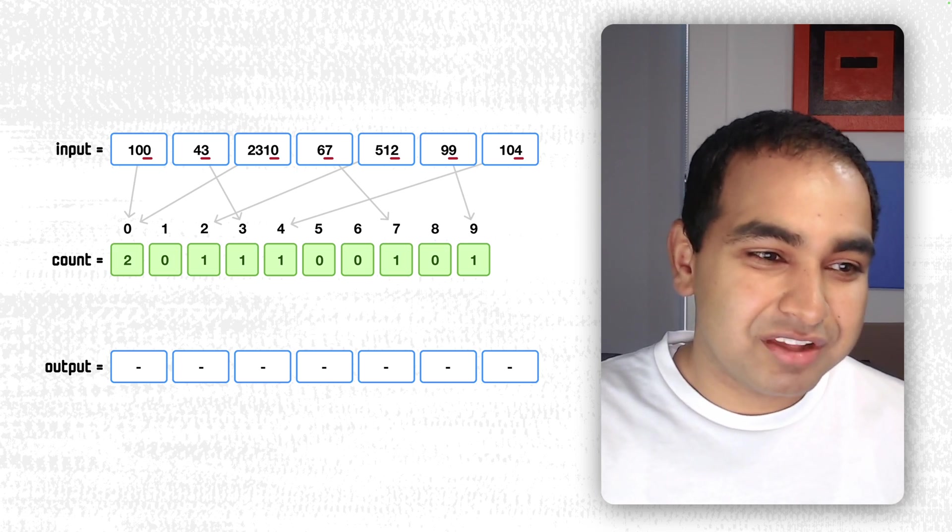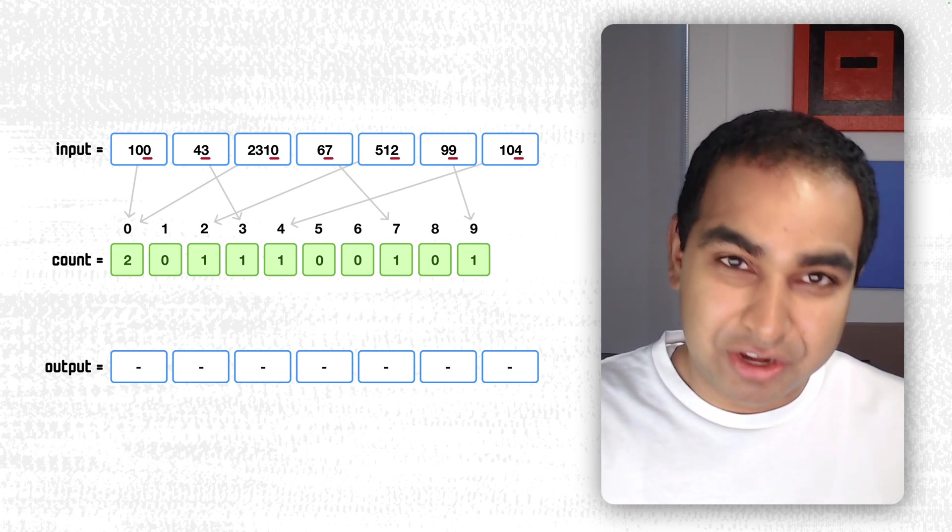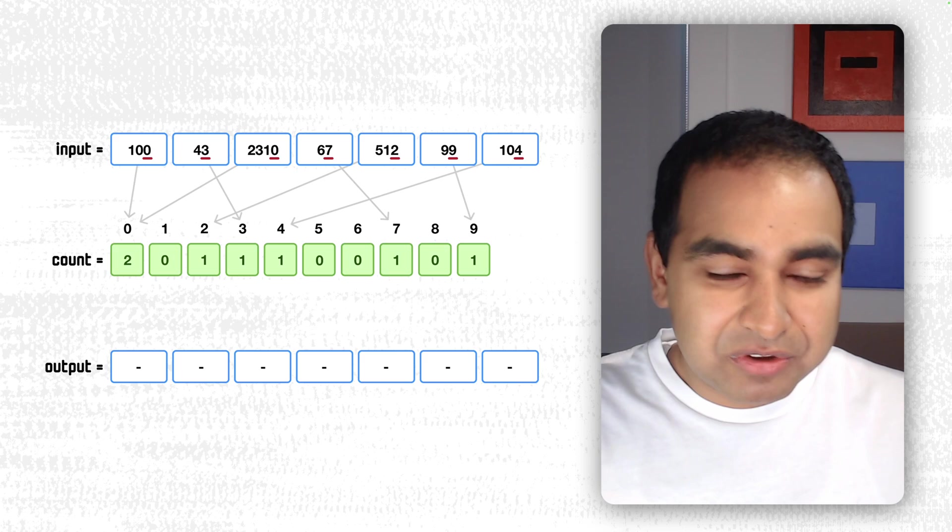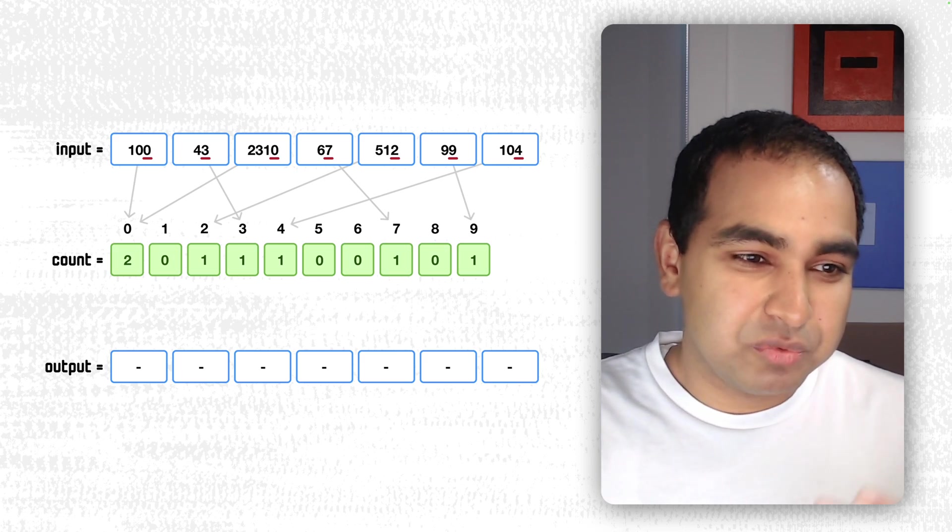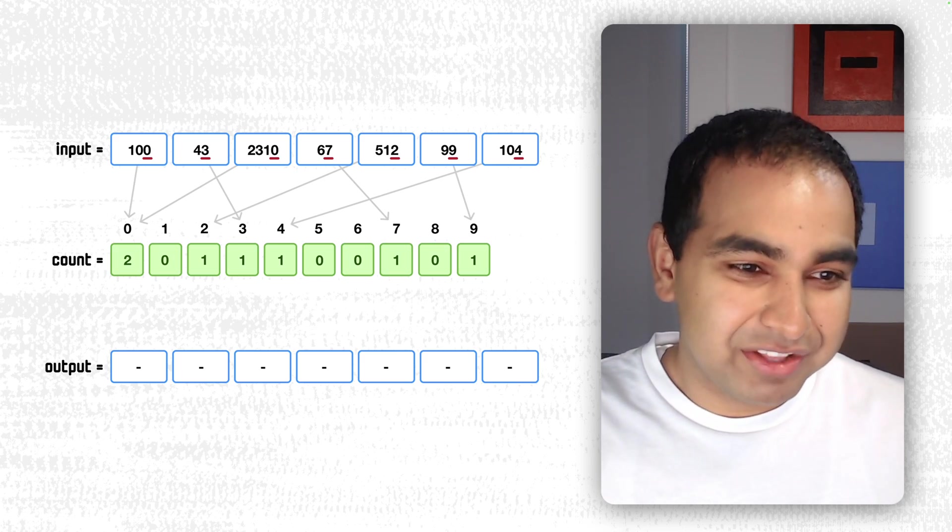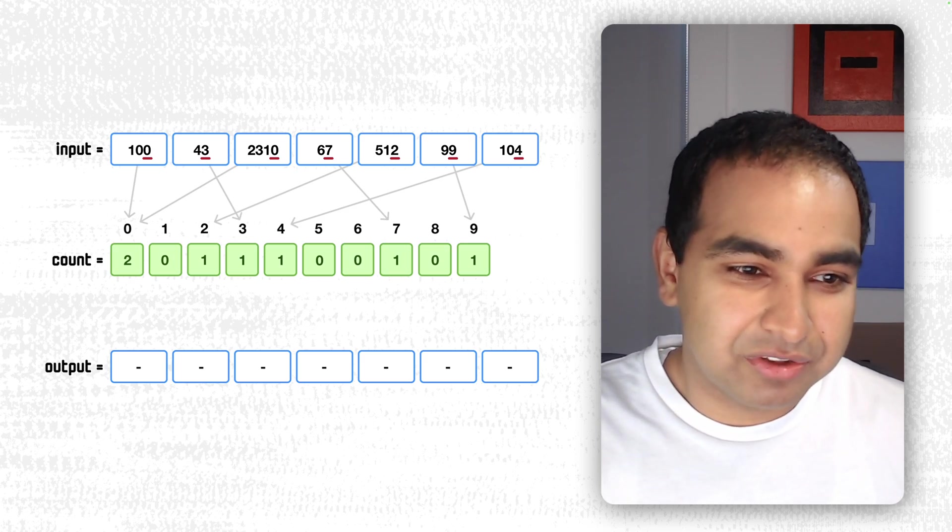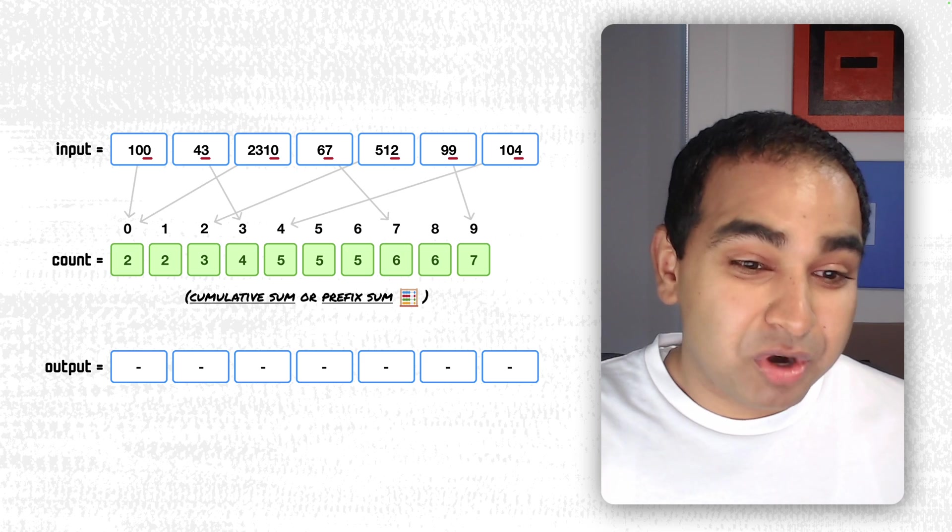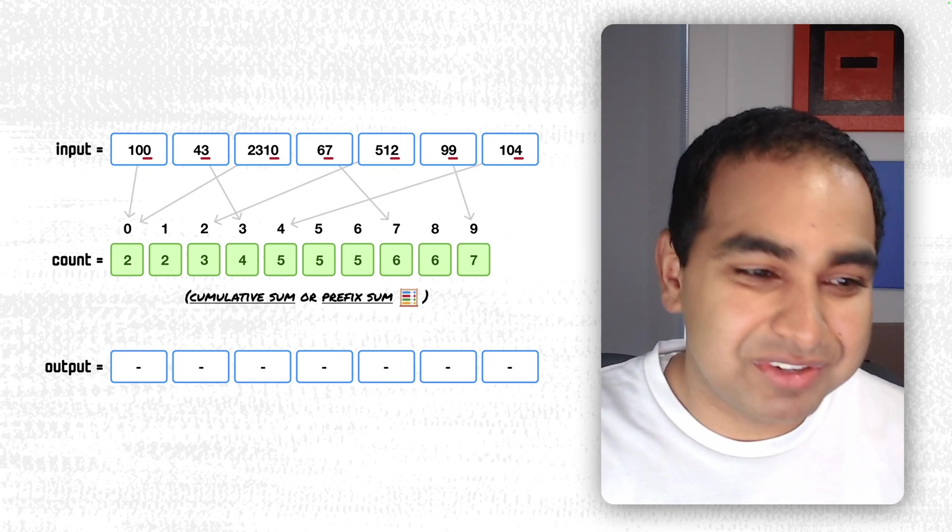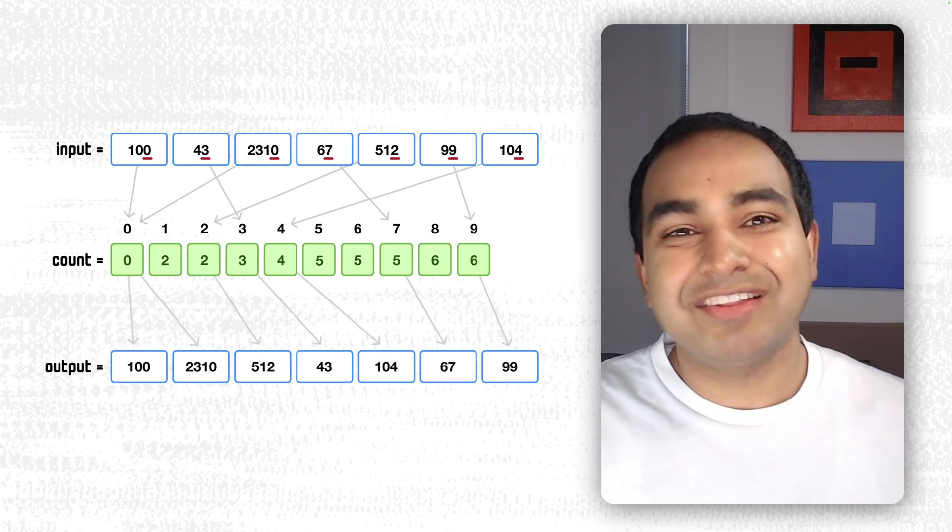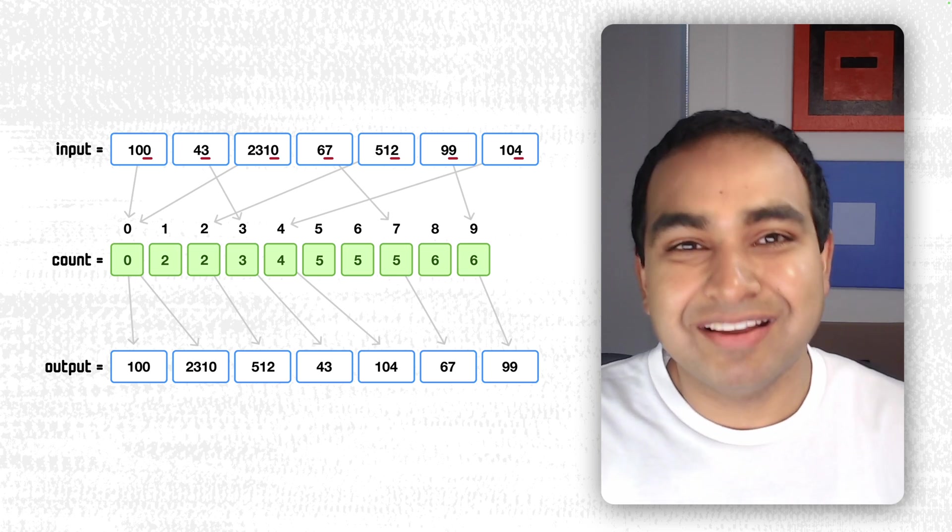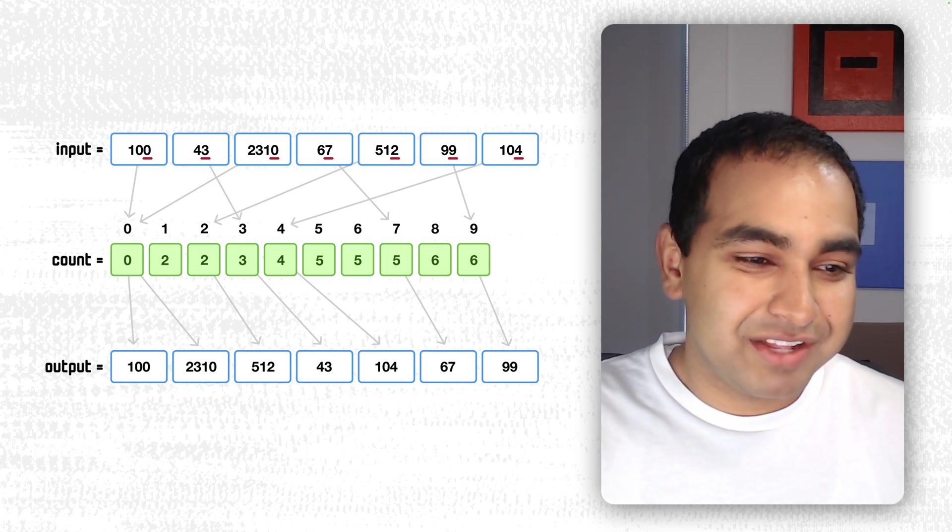And what we would do is do the typical counting of making sure the value matches the index position we're caring about. So in this case, there are two values of 0, so the count value is 2. And if you go through the array, you have two values of 0, one value of 2, one value of 3, and we point to the appropriate values causing that. Then we do the cumulative sum or prefix sum, again, traditional Counting Sort 101,